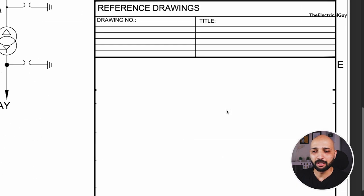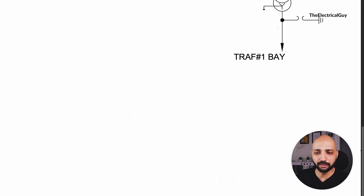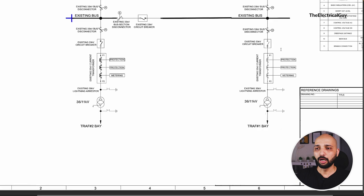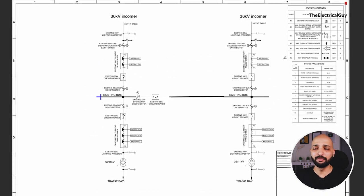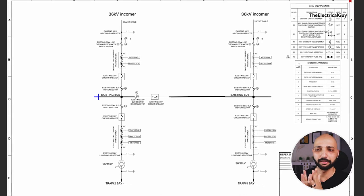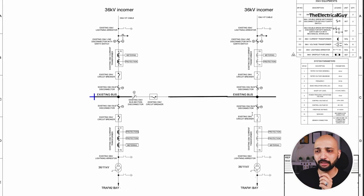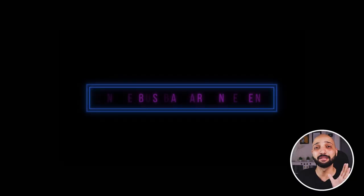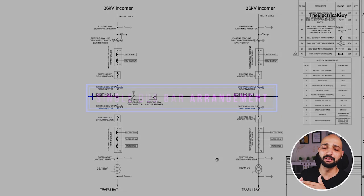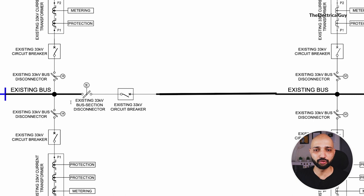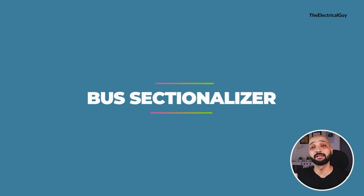At the bottom we have the title block. Now, once we are familiar with the symbols and designations used in this SLD, we need to identify the circuit arrangement. You can see only one bus bar here, which means this is a single bus bar arrangement — the most common type at the 36 kV voltage level. At the center, the two-component portion with a disconnector and circuit breaker is used for the bus sectionalizer.